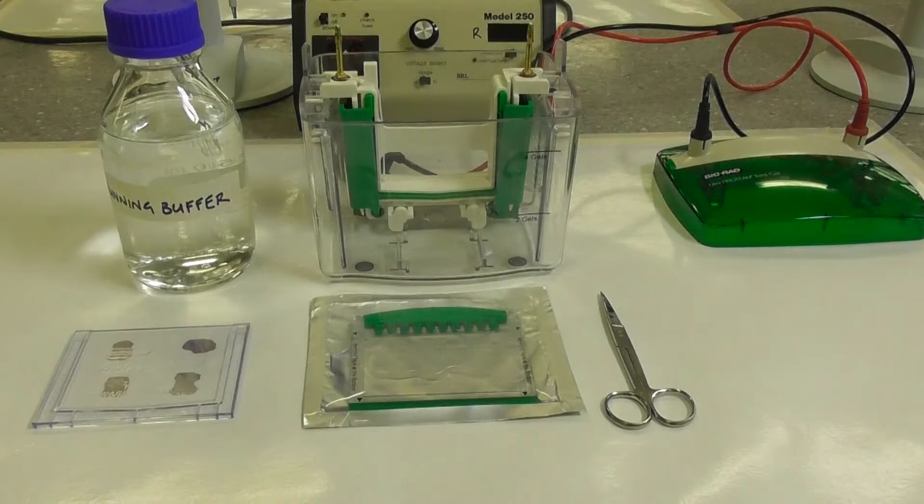While the samples are heating the gel running apparatus is assembled. This consists of a gel tank, denaturing running buffer and an appropriate denaturing gel. Here we are using precast gels.